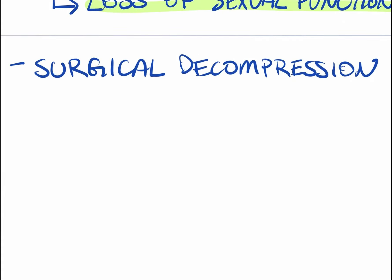The only real treatment as of now is surgical decompression. What they will do is find the area of herniation where the compression is happening and cut away part of the vertebra to create more room so the spinal cord and cauda equina can decompress and function properly.